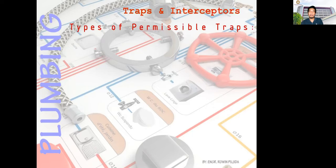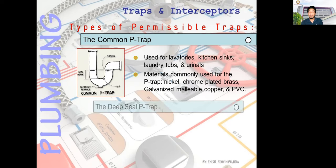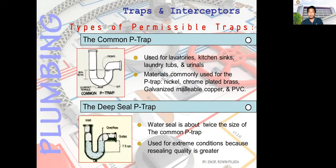Types of permissible traps: first is the common P-trap, used in lavatories, kitchen sinks, laundry tubs, and urinals. Materials commonly used are nickel-plated brass, galvanized malleable, copper, and PVC — the most common being PVC. Next is the deep-seal P-trap, where the water seal is about twice the size of the common P-trap, used for extreme conditions because the sealing quality is greater — trapping foul odors coming from canals or grease traps.